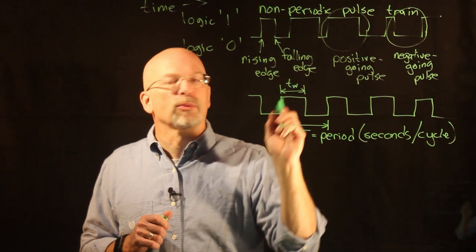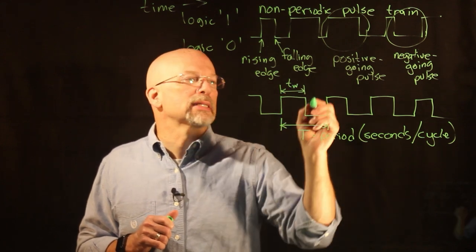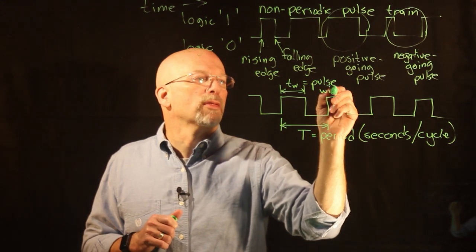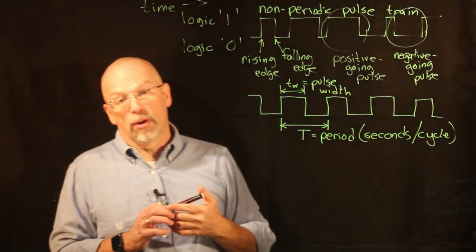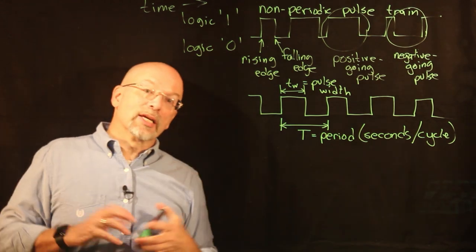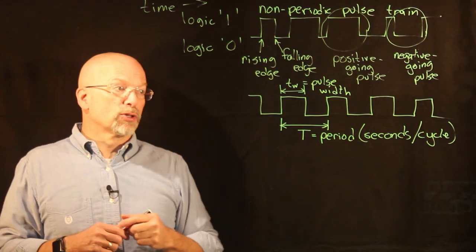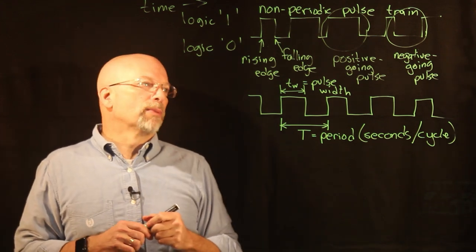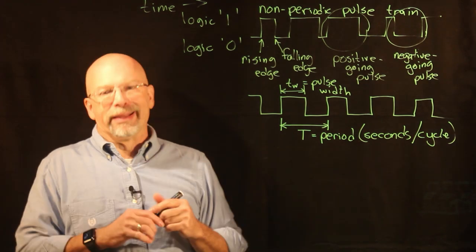The second thing that I need to have in order to represent this signal is what we refer to as the pulse width, which is represented with a lowercase t sub w. This guy is the pulse width. More specifically it is the positive going pulse width, but when it comes to representing these periodic pulse trains, we're just going to refer to it as the pulse width.